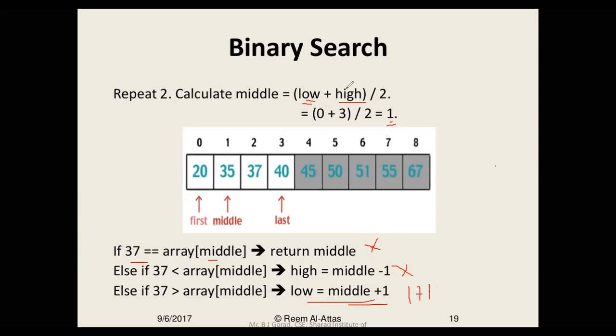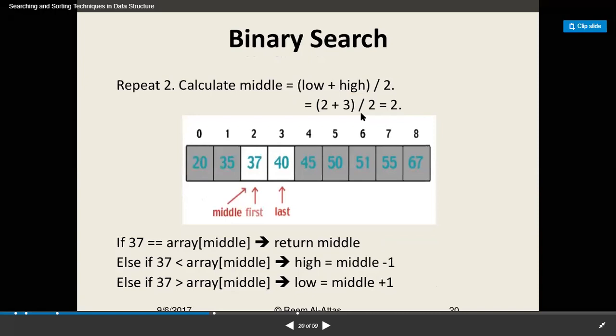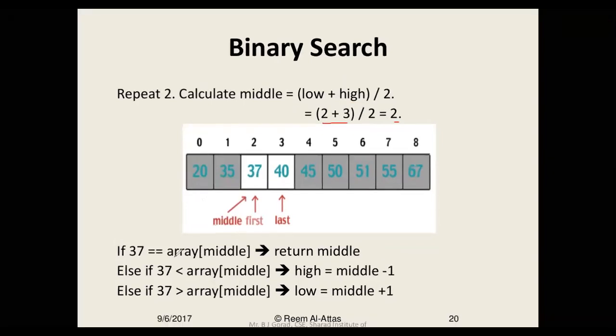After this, if we calculate the value of middle, that is 2 plus 3 divided by 2, it becomes 2. Now as we can see, the array middle which is index 2 equals 37, so we are done here and that's how it exits.